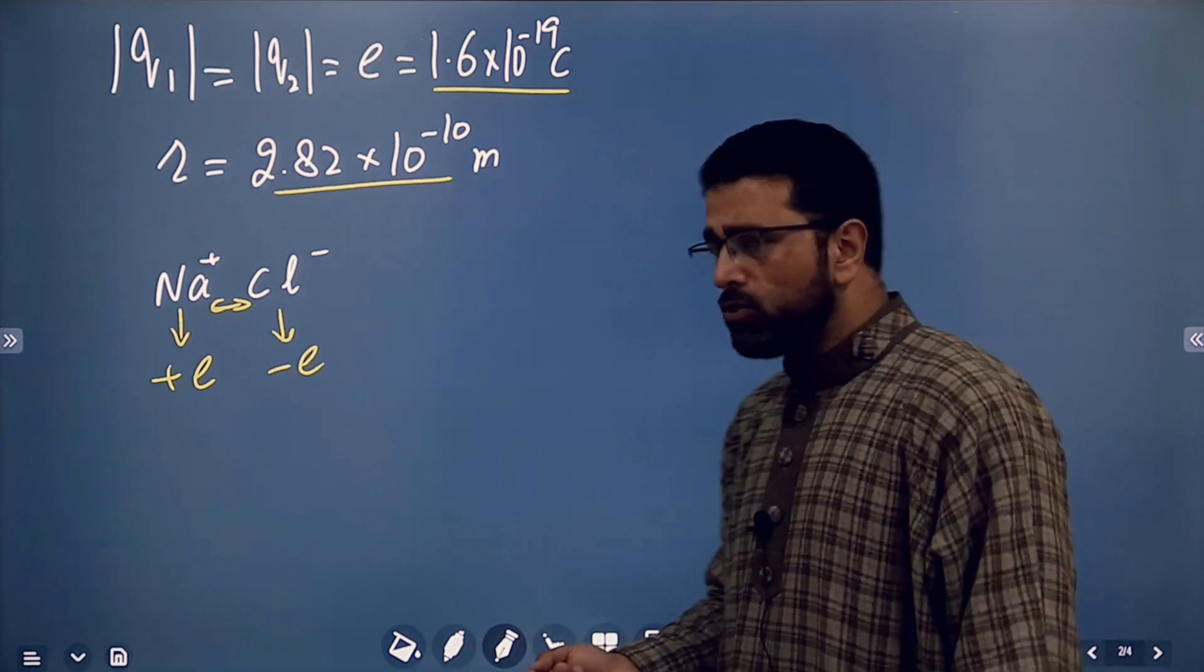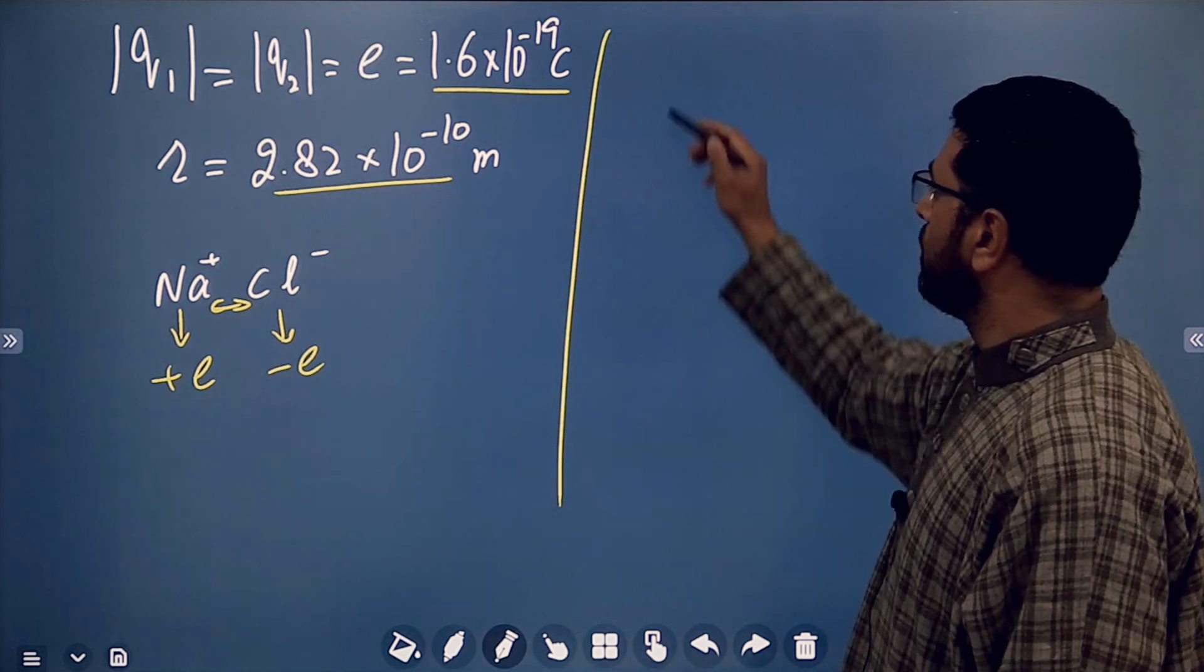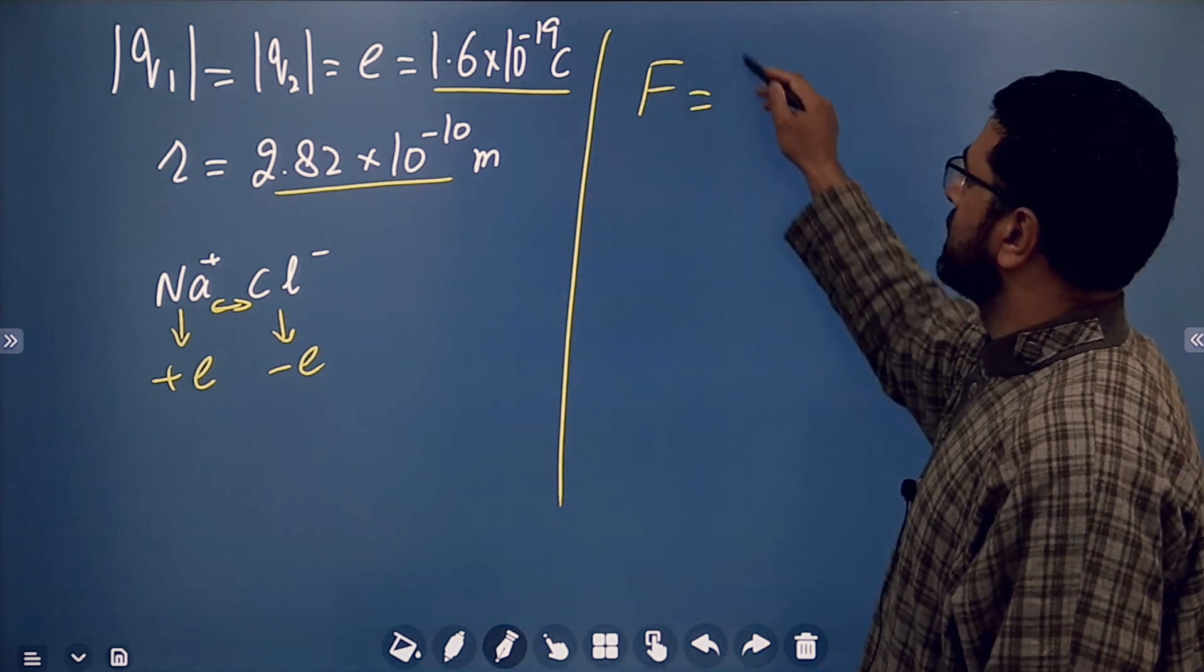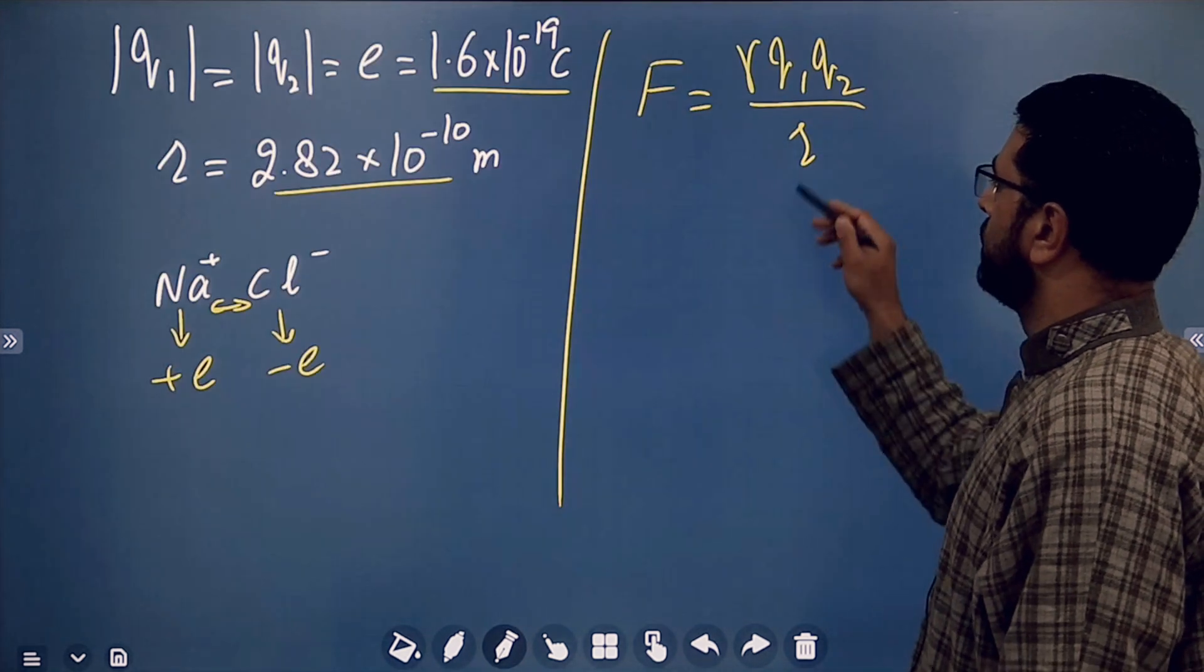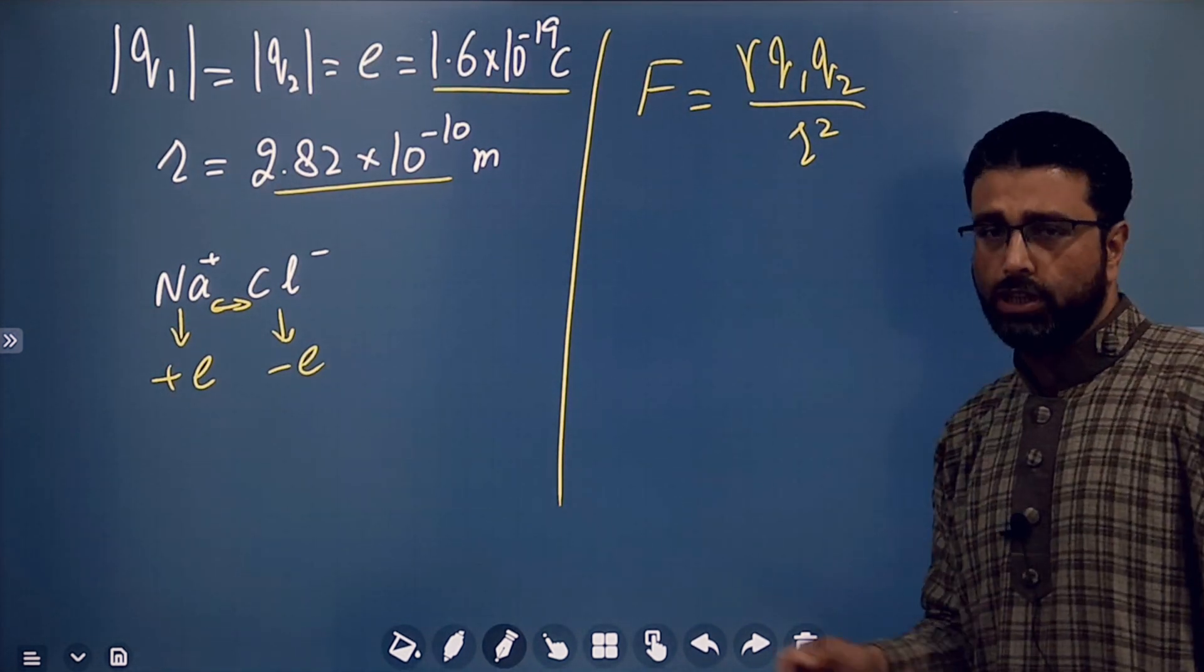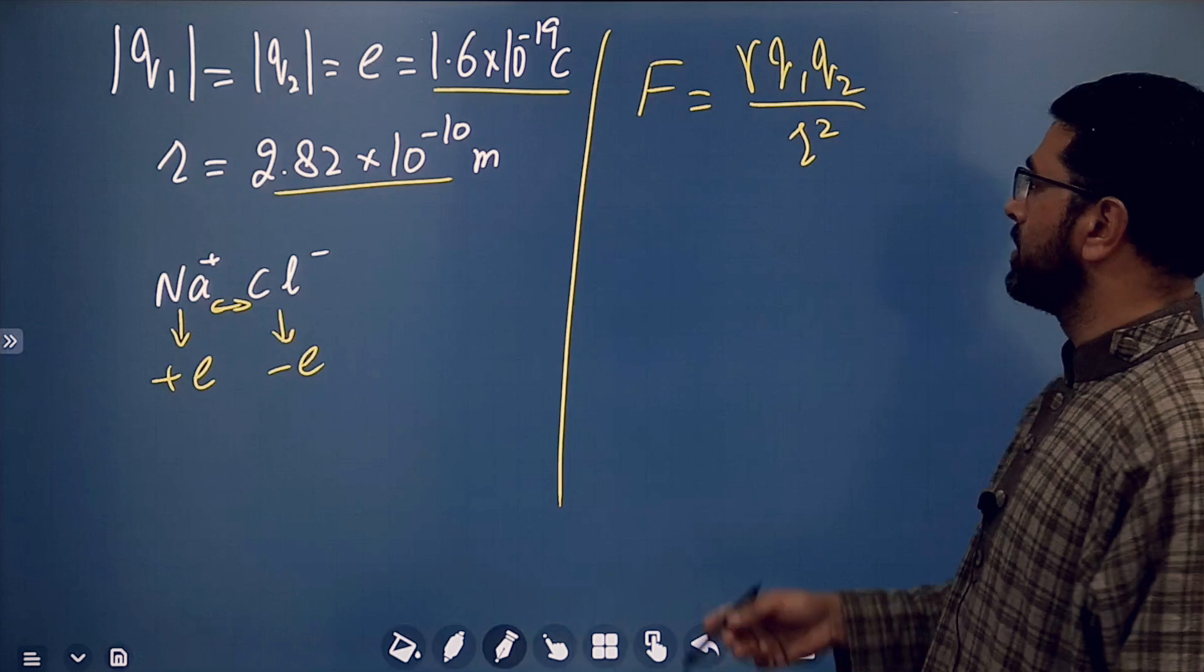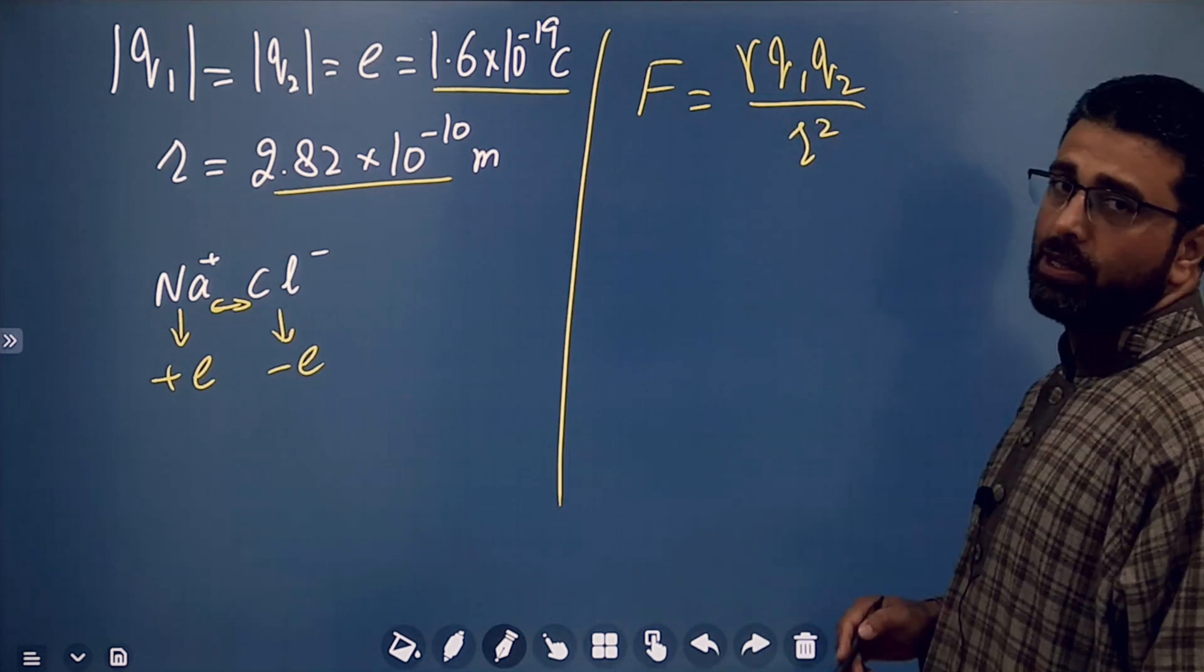We are going to find out force between them. So, simple, very simple. Coulomb's law is γQ1Q2 divided by R squared. Force between these two ions, any two charges in fact, is γQ1Q2 divided by R squared.